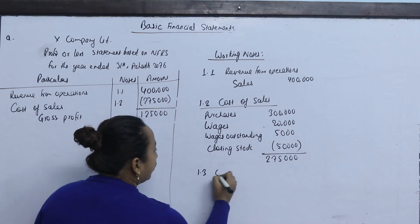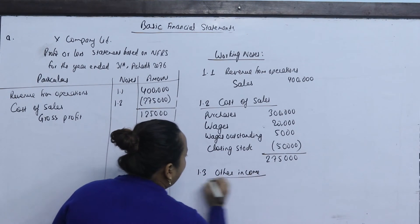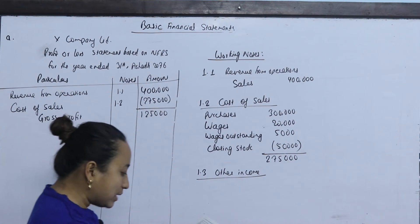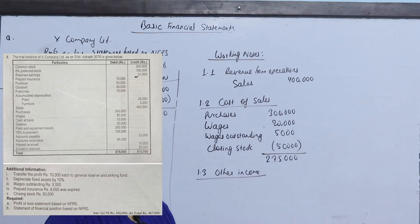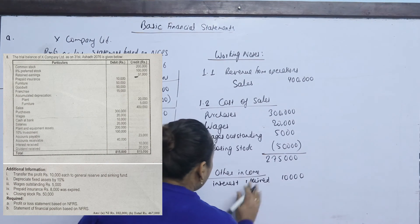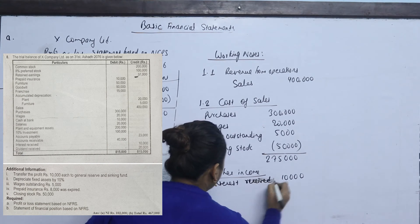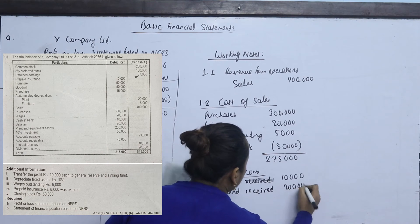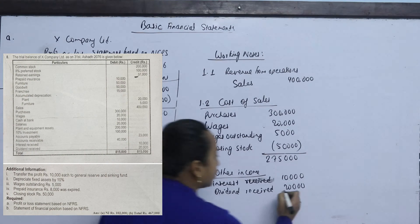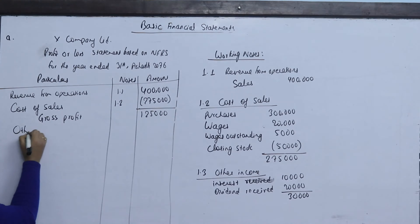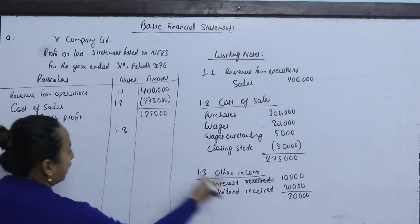Working note 1.3 is Other Income. From the question, interest received is 10,000 and dividend received is 20,000. Total other income is 30,000.